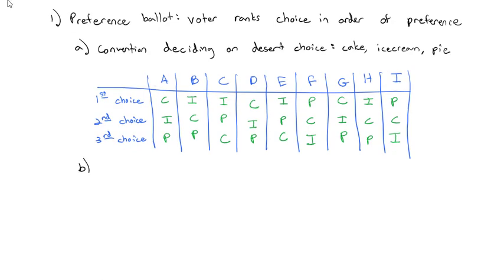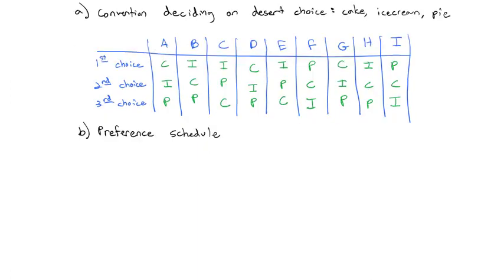A preference ballot is often very difficult to read, especially if we have hundreds or even thousands of votes. So quite often, we'll summarize the results in what's called a preference schedule. With our preference schedule, we'll take a look at our first choice, second choice, and third choice.